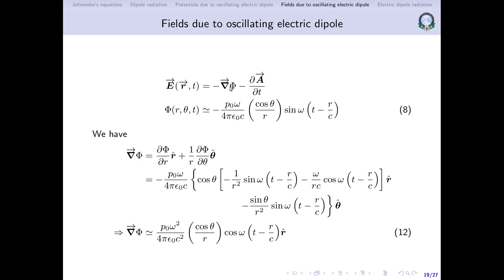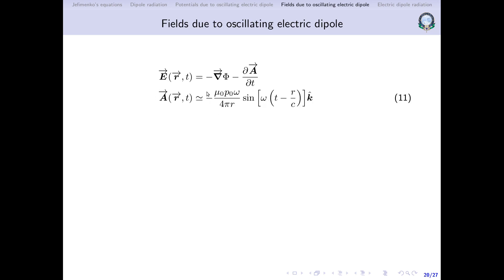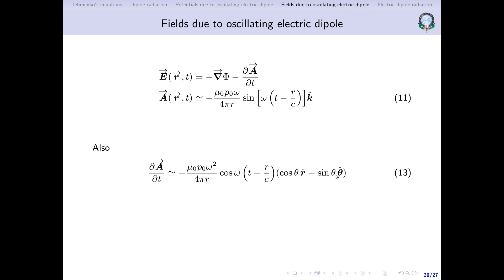Next, we find the time rate of change of A. Differentiating A with respect to t, using the chain rule, differentiating sine gives cosine, and an extra ω comes out. This gives μ₀p₀ω² / (4πr) · cos(ωt − r/c). We also need to convert k-cap from Cartesian to spherical polar coordinates: k-cap = cos θ r-cap − sin θ θ-cap. This is ∂A/∂t.